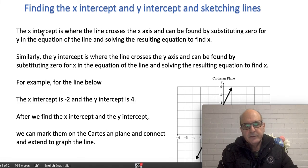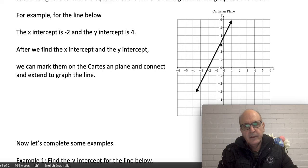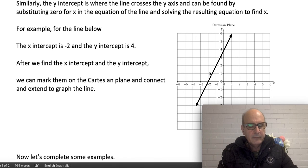The x-intercept is where your line crosses the x-axis, and the y-intercept is where your line crosses the y-axis. I've got a straight line here — as you can see, it crosses the y-axis at four, so the y-intercept is four. Also, this line crosses the x-axis at minus two, so the x-intercept is minus two.